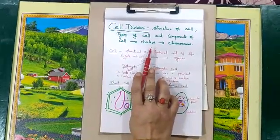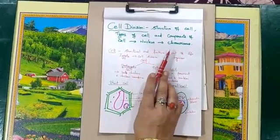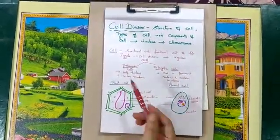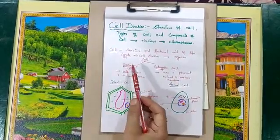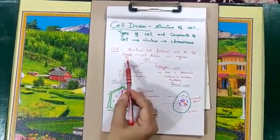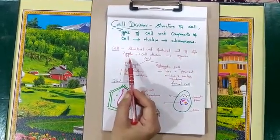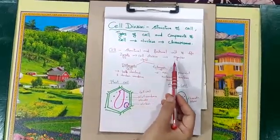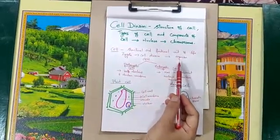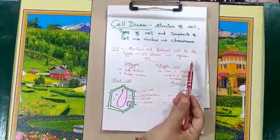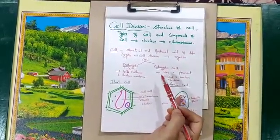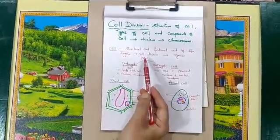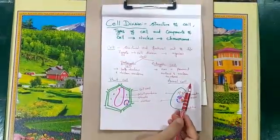We will cover the nucleus and chromosomes. As we know, life starts with a single cell called a zygote, which undergoes repeated division to form an organism to perform various tasks. So we call the cell the structural and functional unit of life.